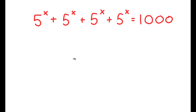All right, so in this problem, I have 5 to the power of x plus 5 to the power of x plus 5 to the power of x plus 5 to the power of x is equal to 1,000.